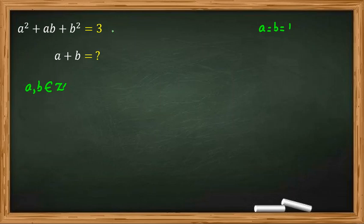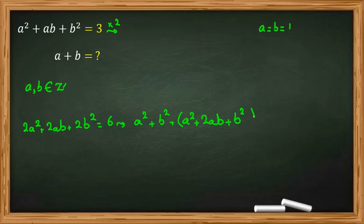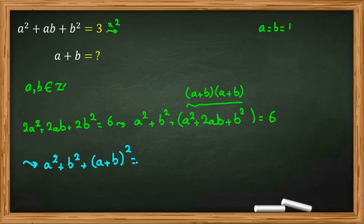Now, here, if we multiply it by 2, let's multiply this by 2, so it will be 2a squared plus 2ab plus 2b squared equal to 6. Then we can rearrange a squared plus b squared plus a squared plus 2ab plus b squared equal to 6. Now here, this part we can factorize. It's a plus b times a plus b, because a squared, b squared, ab plus ba is 2ab. In the next step, we can write a squared plus b squared plus a plus b squared equal to 6.